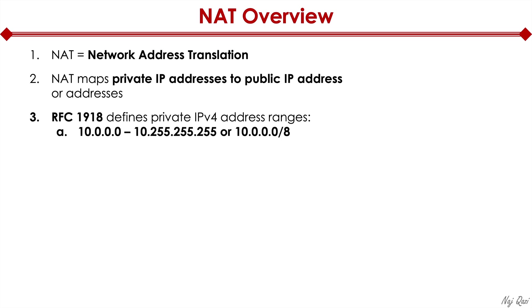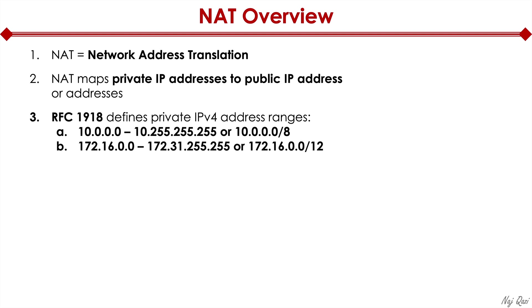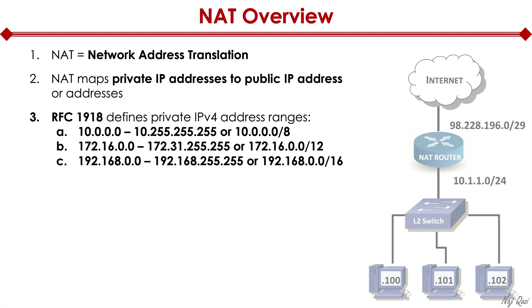Here are the three ranges defined in RFC 1918. The first range is 10.0.0.0 all the way through 10.255.255.255, which can also be abbreviated as 10.0.0.0/8. The next range is 172.16.0.0/12, and the final range is 192.168.0.0/16.